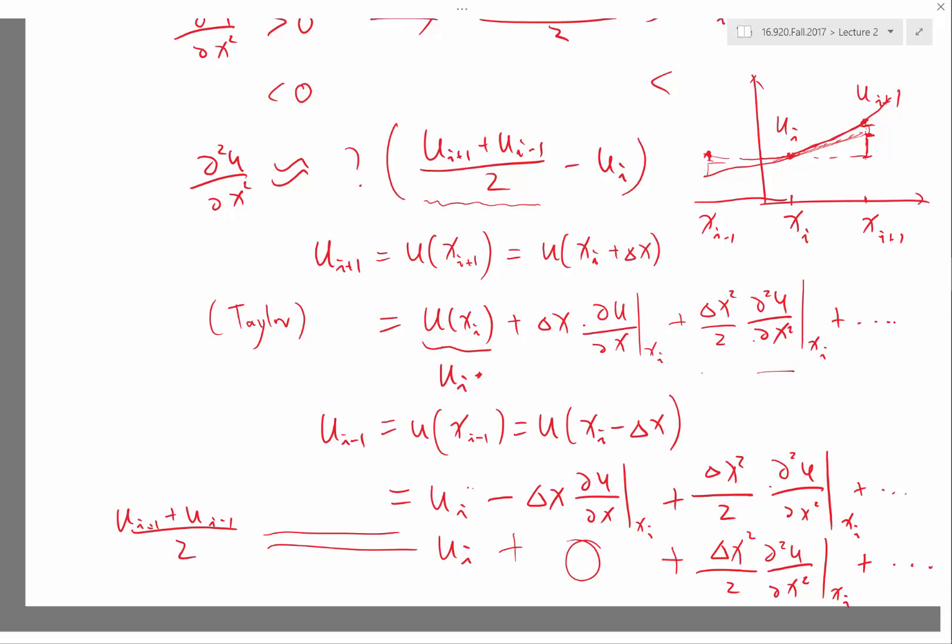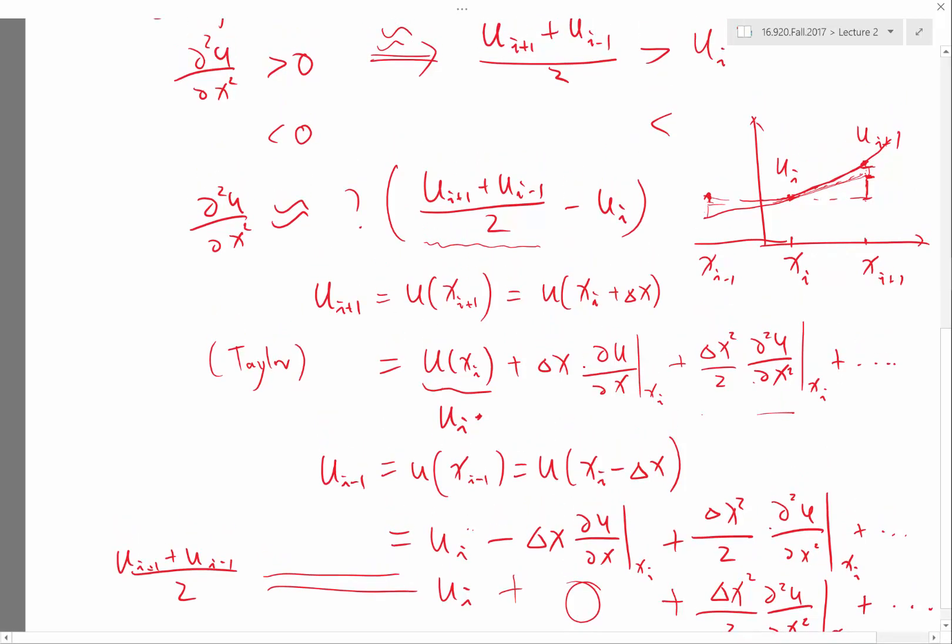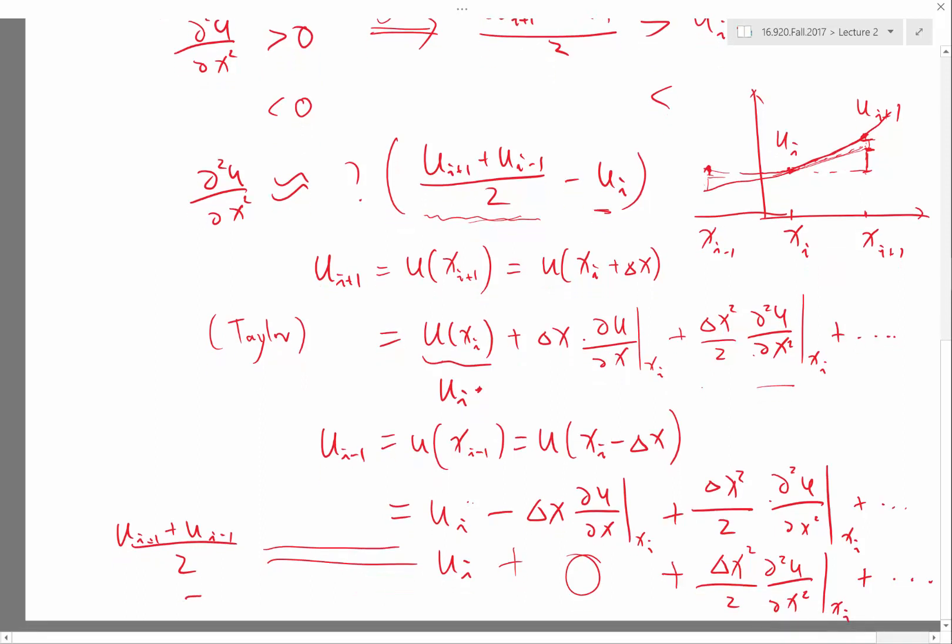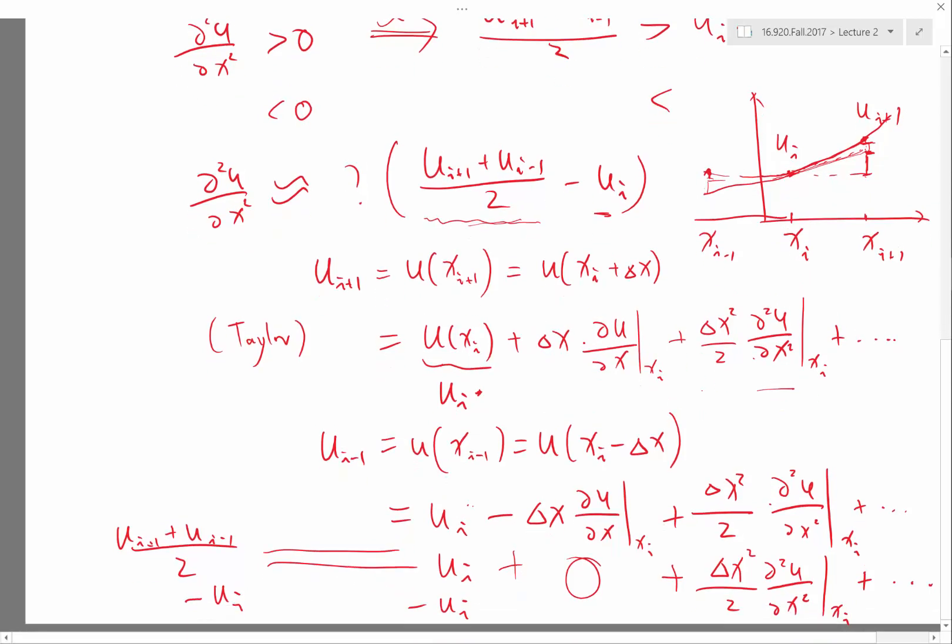So now we can see the nice thing about subtracting the average with the value of ui because if I subtract the average with the value of ui, then I'm going to be subtracted with ui. This is going to be 0. So the only thing I left with is a second of the derivative times half of the delta x squared, right?